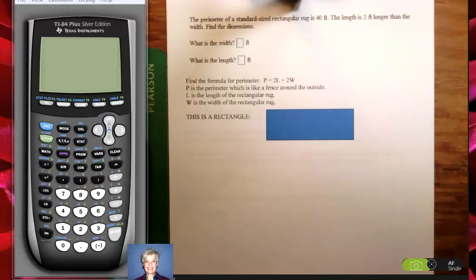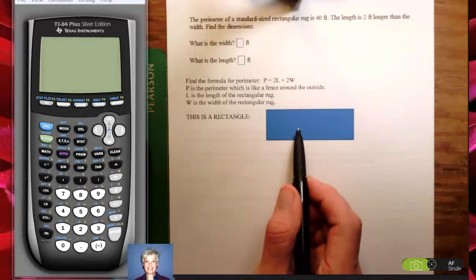This is a perimeter problem, it's also a formula problem. There are some things you need to do. One, you need to know what a rectangle is. This is a rectangle.